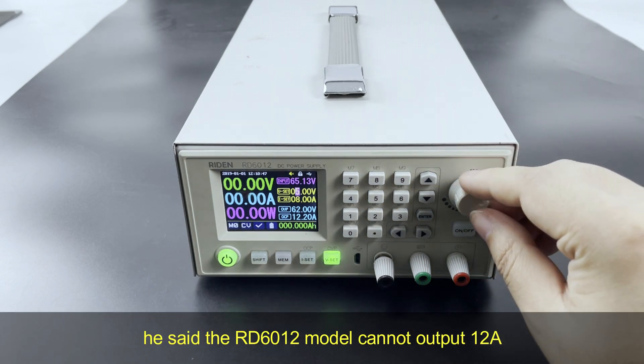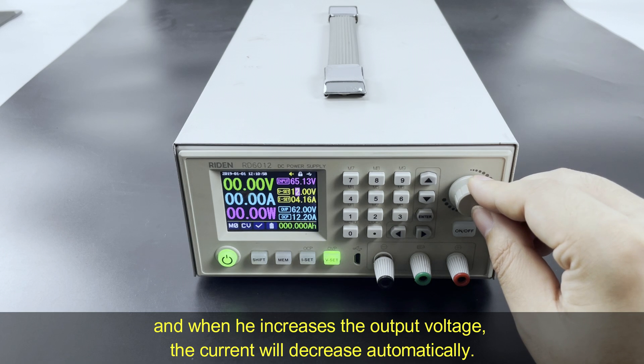He said the RD6012 model cannot output 12 Amp. And when he increase the output voltage, the current will decrease automatically. Just like this.